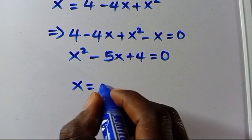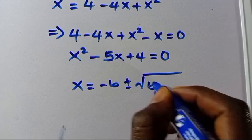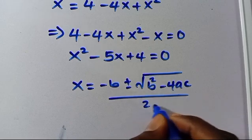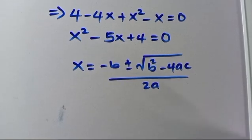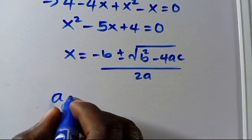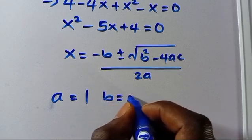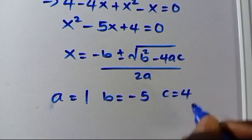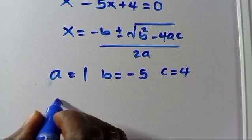From here we obtain the value of x using the quadratic formula: x equals minus b plus or minus the square root of b squared minus 4ac, all over 2a. Here the parameter A, the coefficient of x squared, is 1. Parameter B is minus 5. Parameter C is 4.